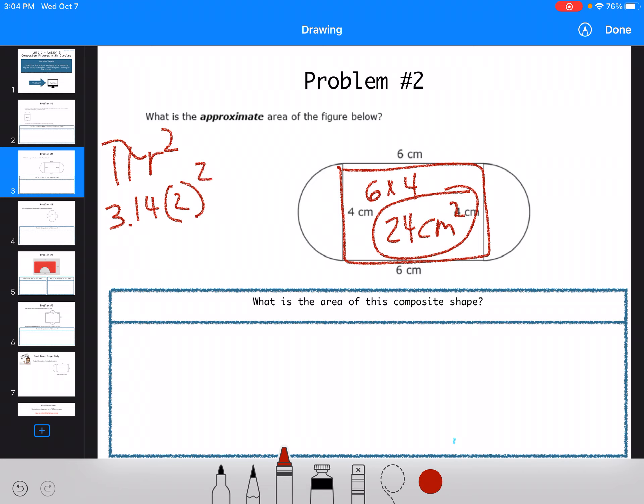So 3.14 times 2 times 2 is going to give me 12.56 centimeters squared. So then I'm just going to add these together. So 24 plus 12.56. And I get a total of 36.56 centimeters squared.